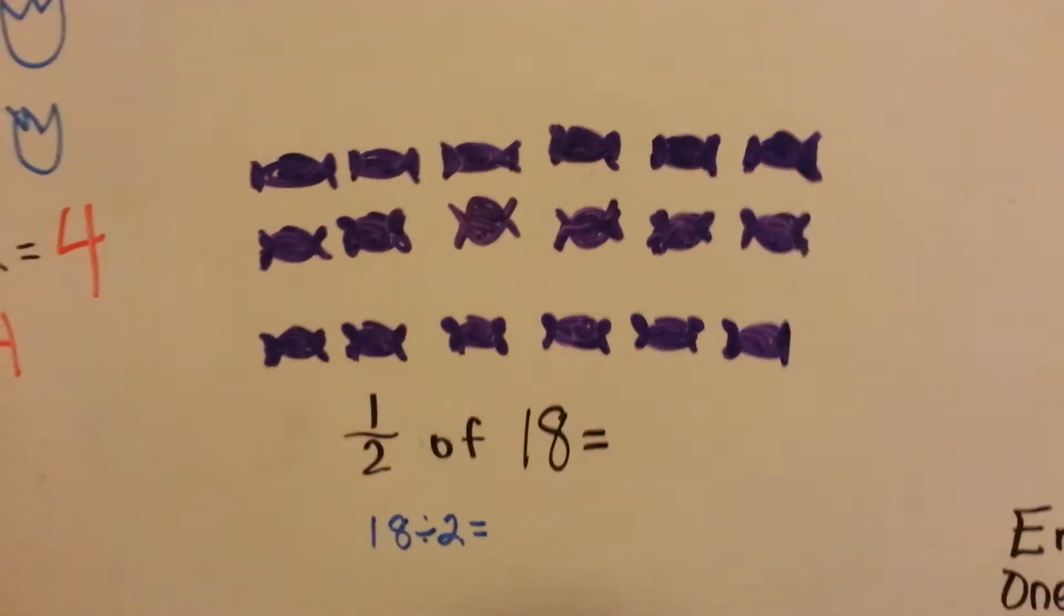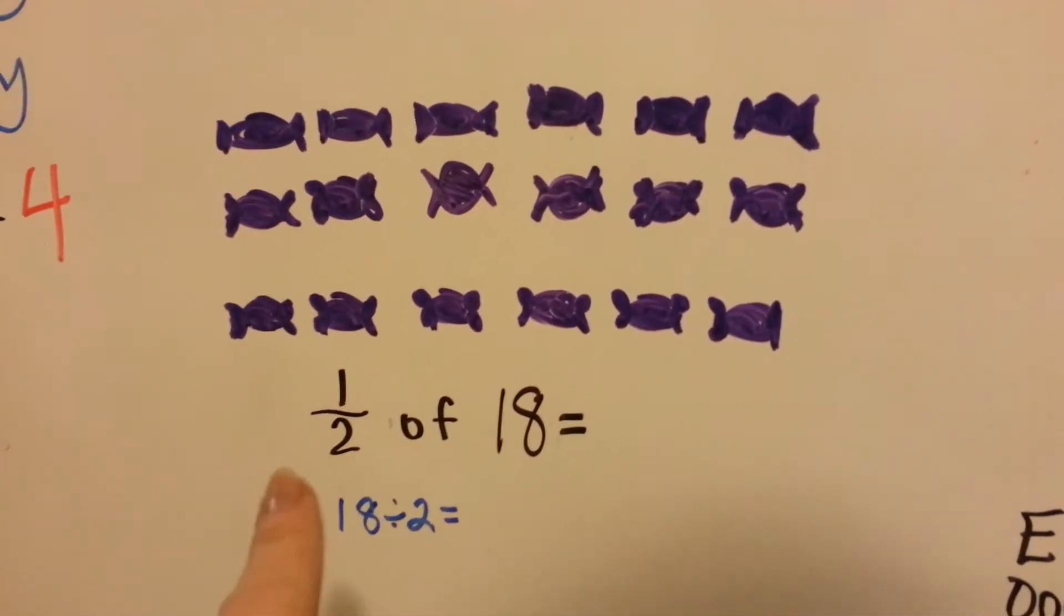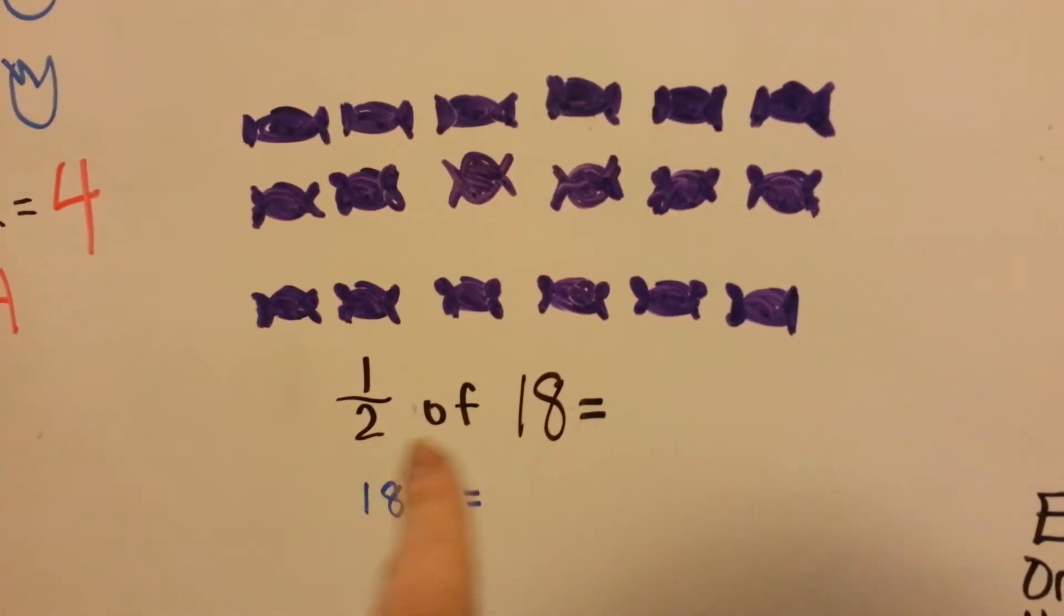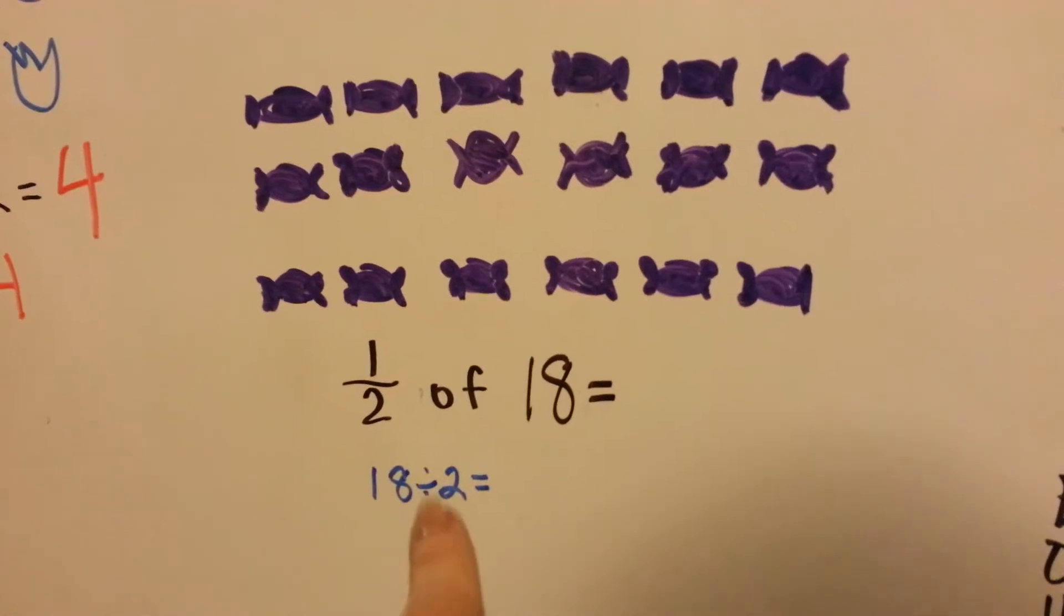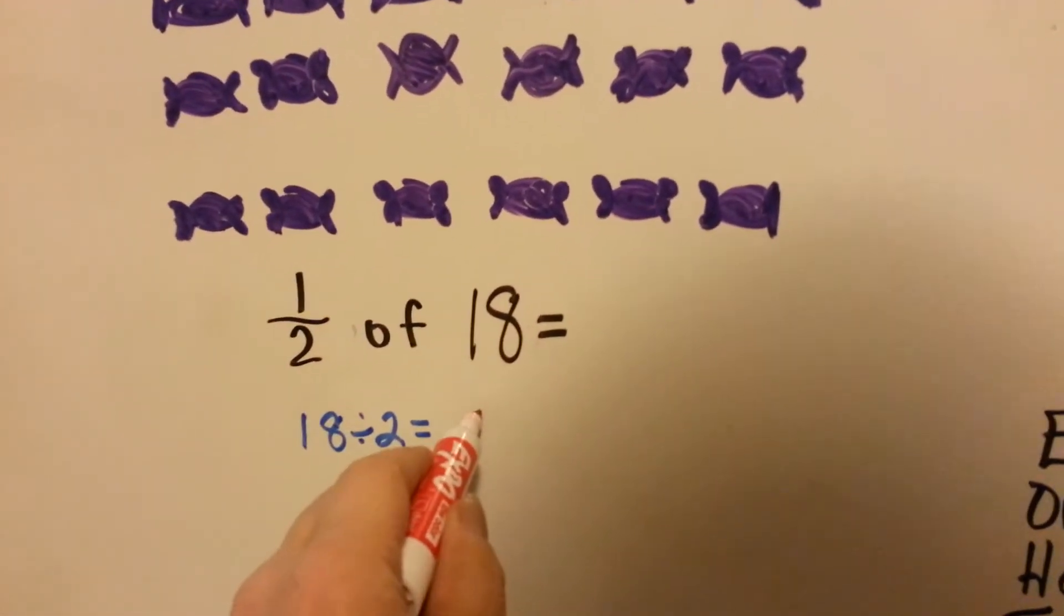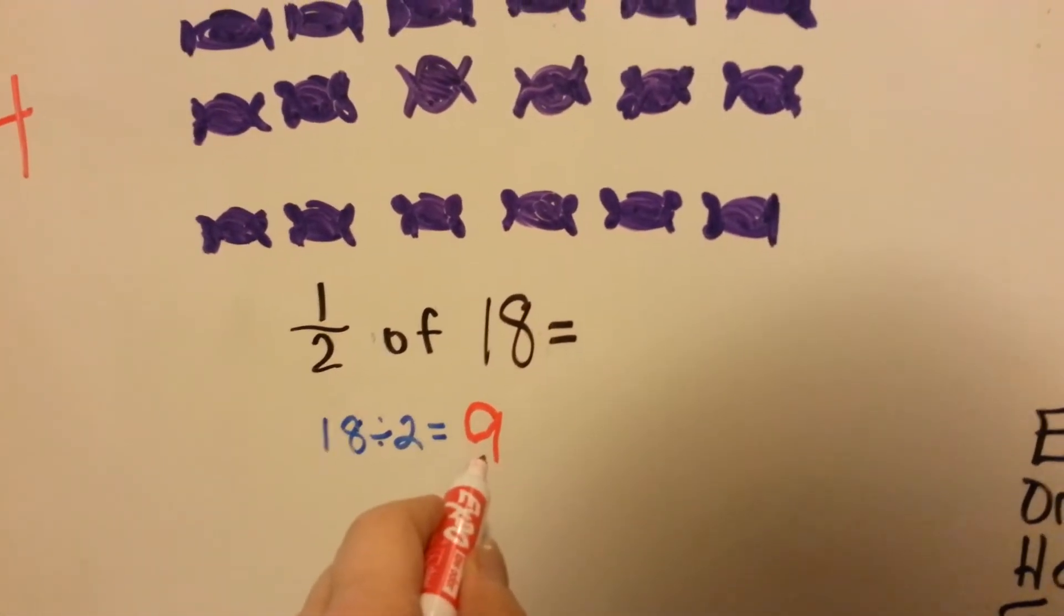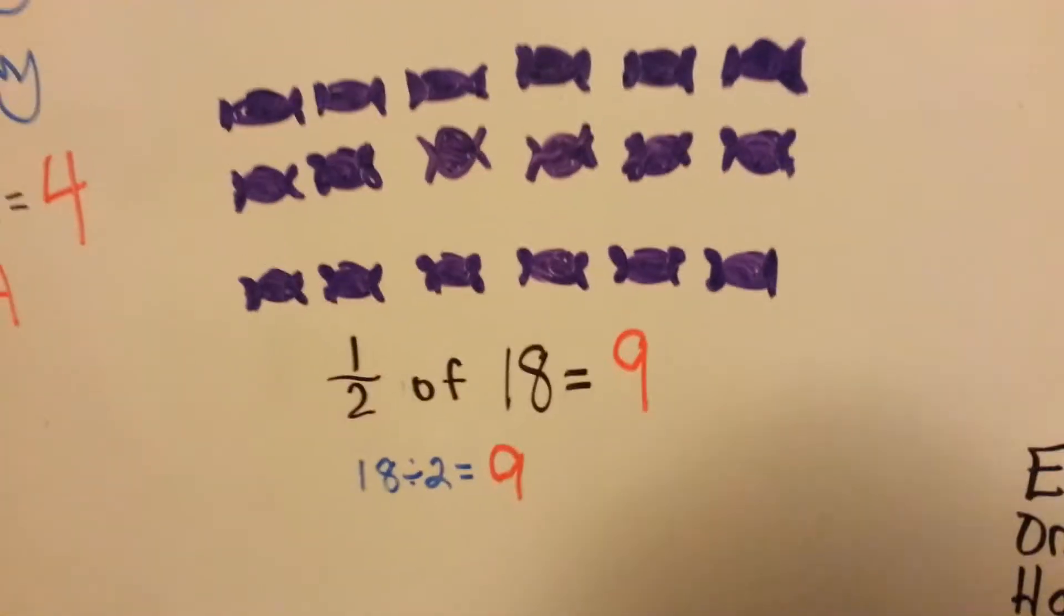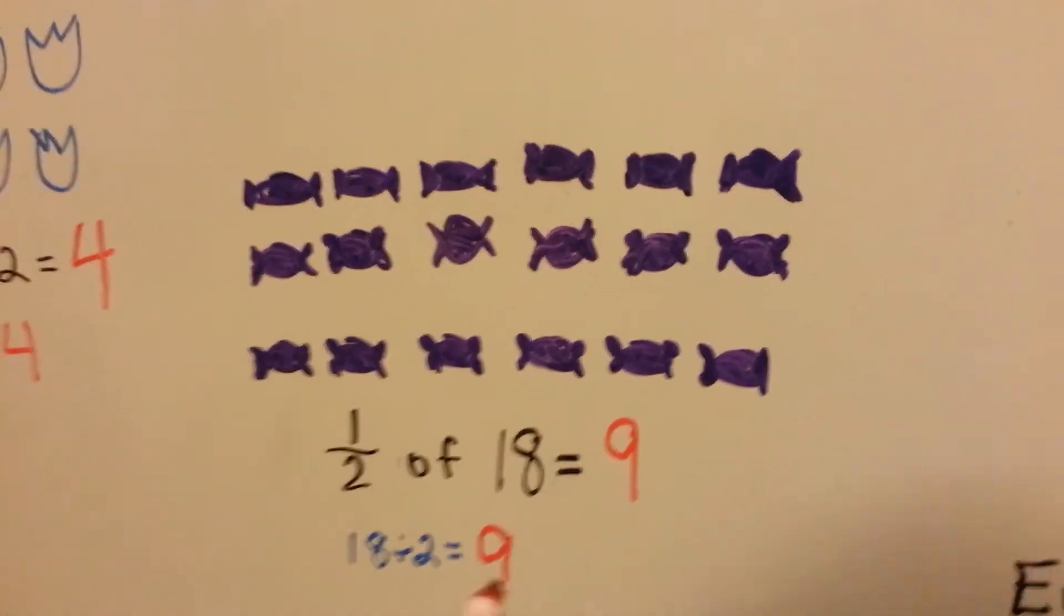Now we have half of 18. Do you know what we're going to do here? We're going to do 18 divided by 2, the denominator and this whole number. 18 divided by 2 is, what's 2 times 9? 2 times 9 is 18. So 18 divided by 2 is 9. Half of 18 is 9. So we need to circle 9 of these grape candies.